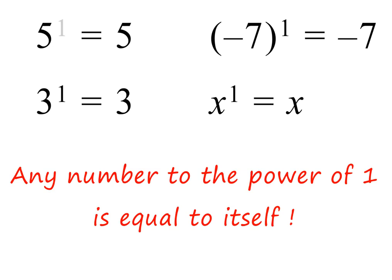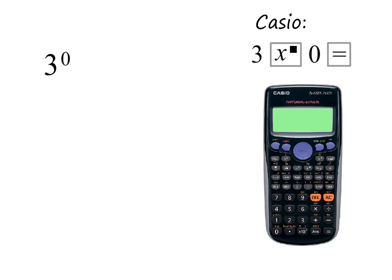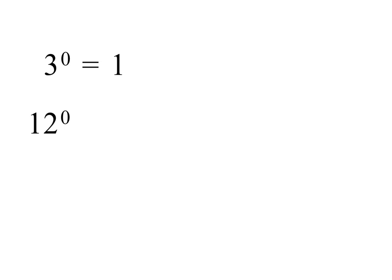Please pause to study this important information. Here we have a power with 0 in the exponent — please pause and use your calculator to find its value. It is equal to 1. Please pause and use your calculator to find the value of 12 to the power of 0. Again, it is equal to 1. Now calculate minus 5 all to the power of 0 — don't forget the brackets. Again, it is equal to 1.